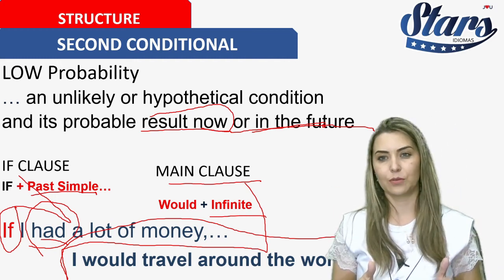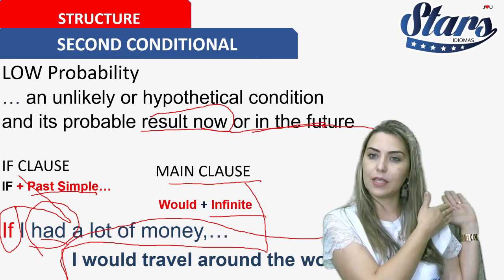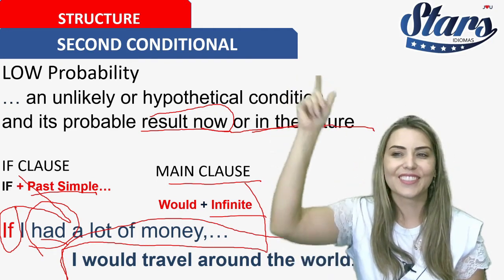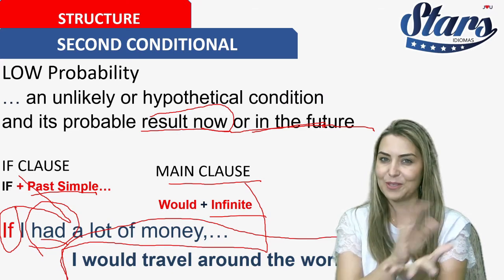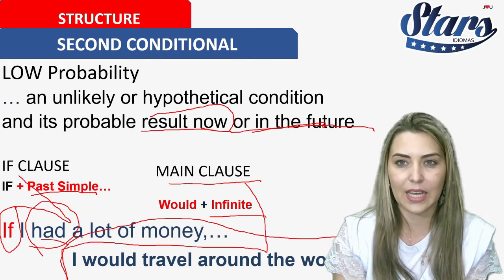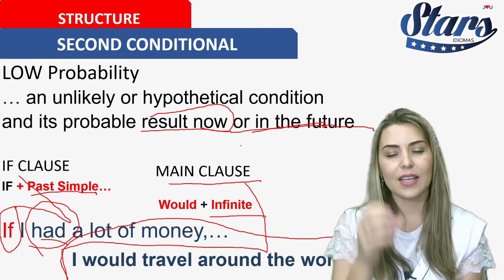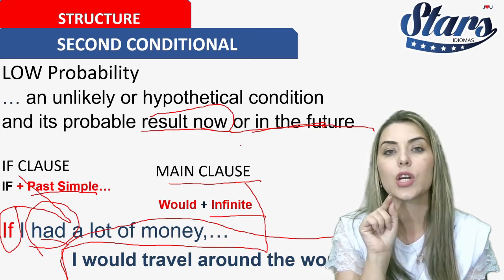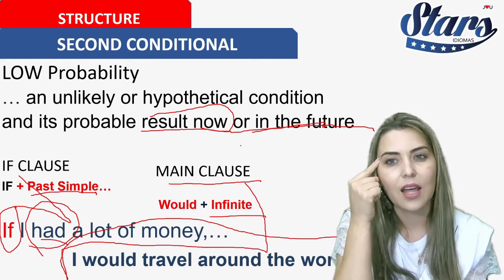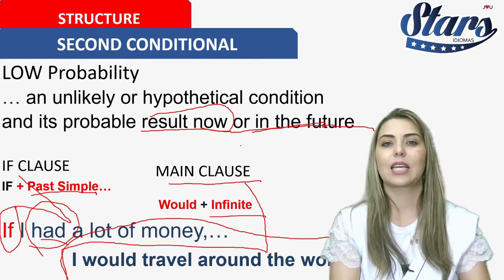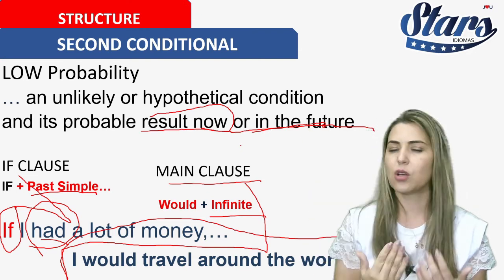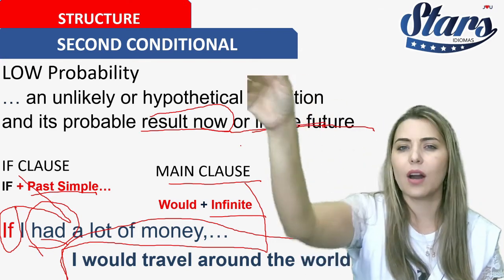The result is expressed with 'would plus infinitive' — that gives the idea of the future. So: past — 'if I had money,' then future — 'I would travel.' If I had money, I would travel the world with you guys. The second conditional is the structure you need to practice in your next conversation class. Remember: something in the past, with a result in the future.